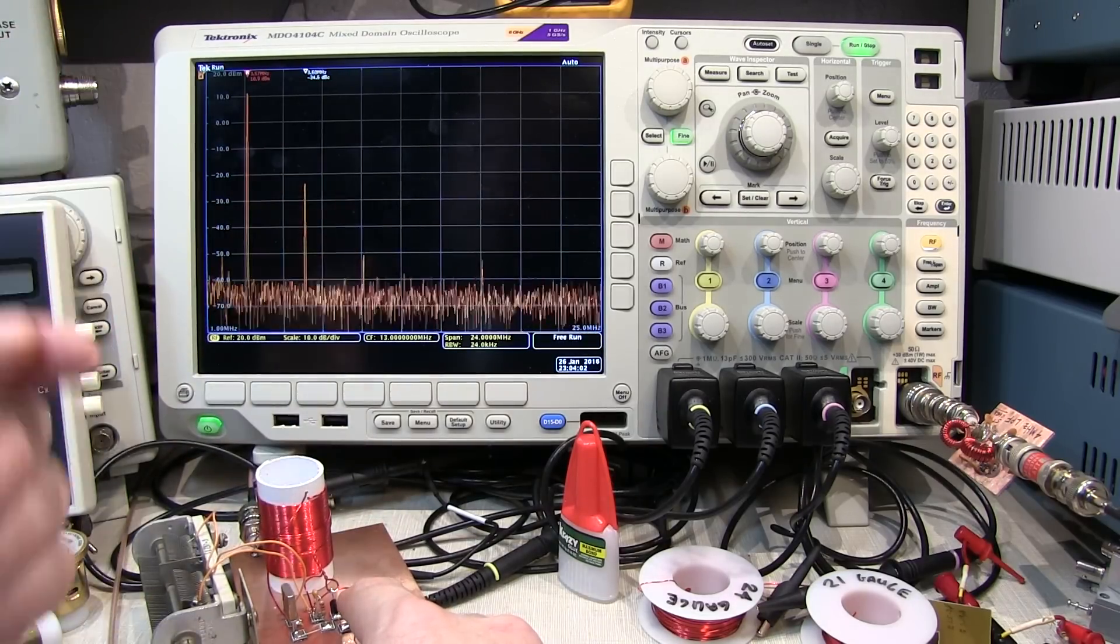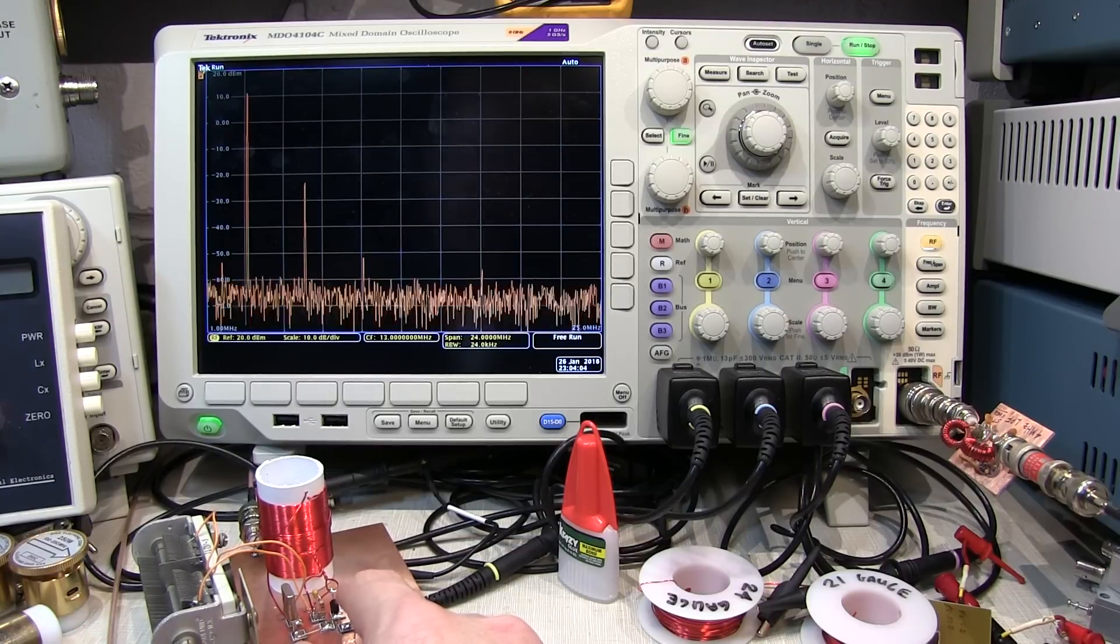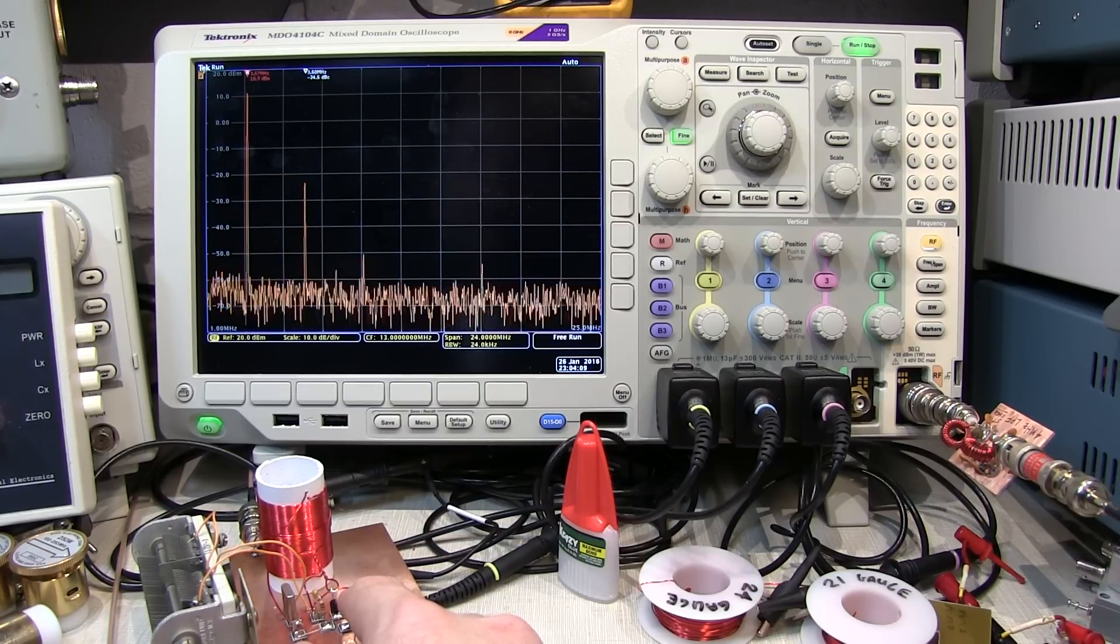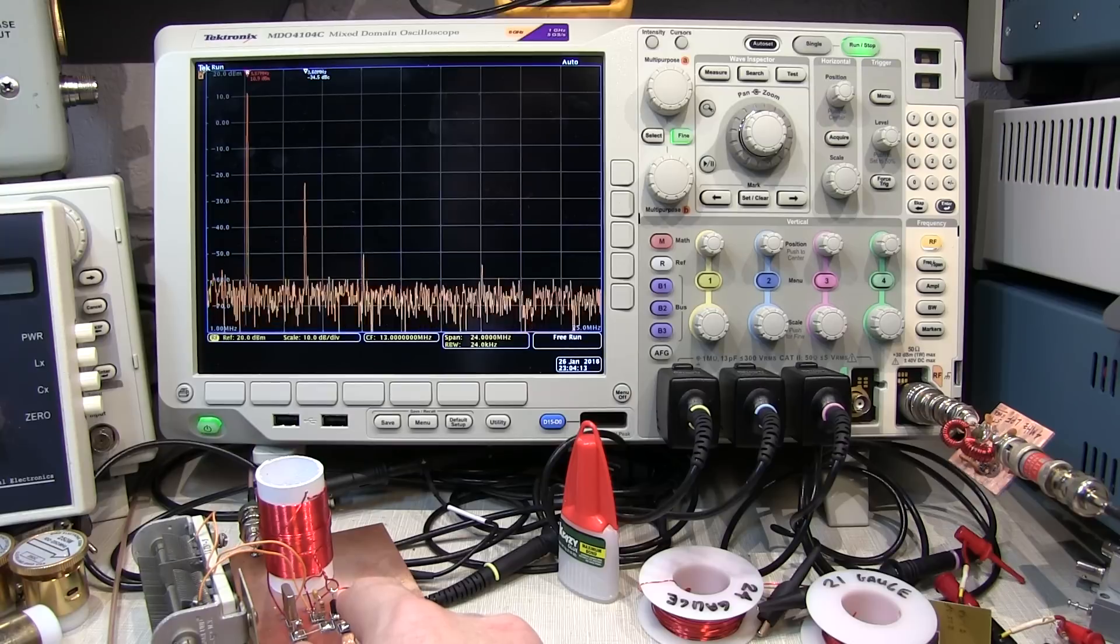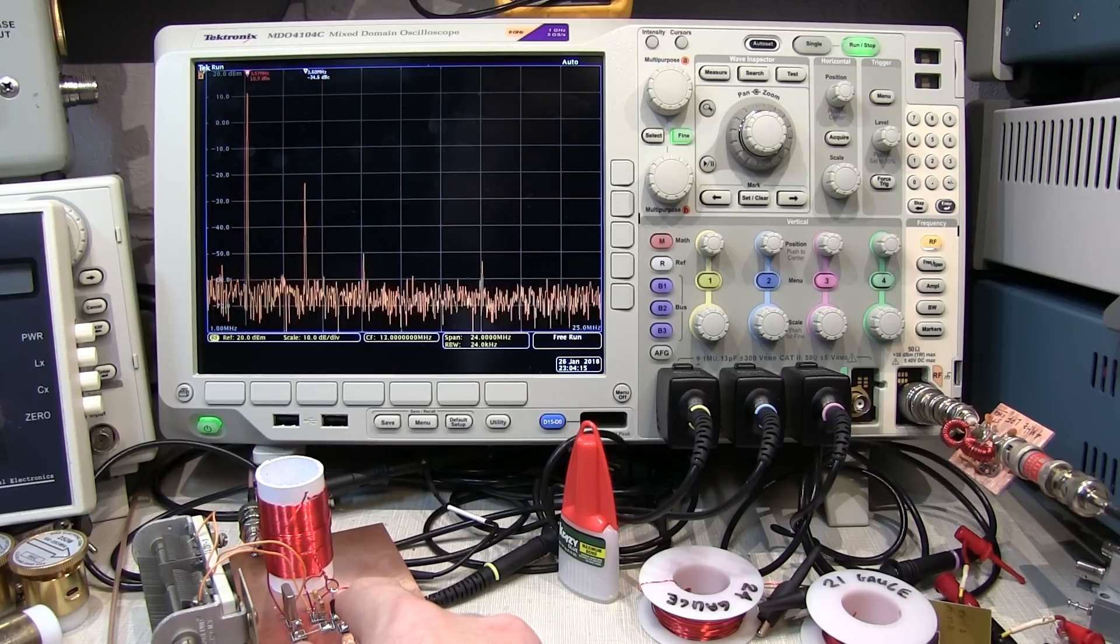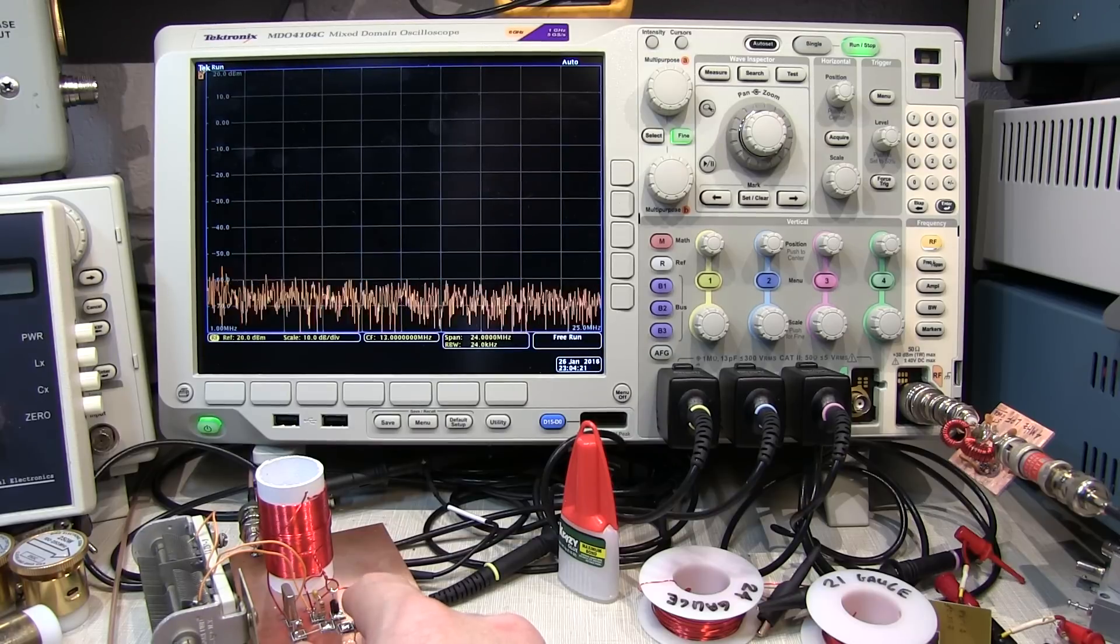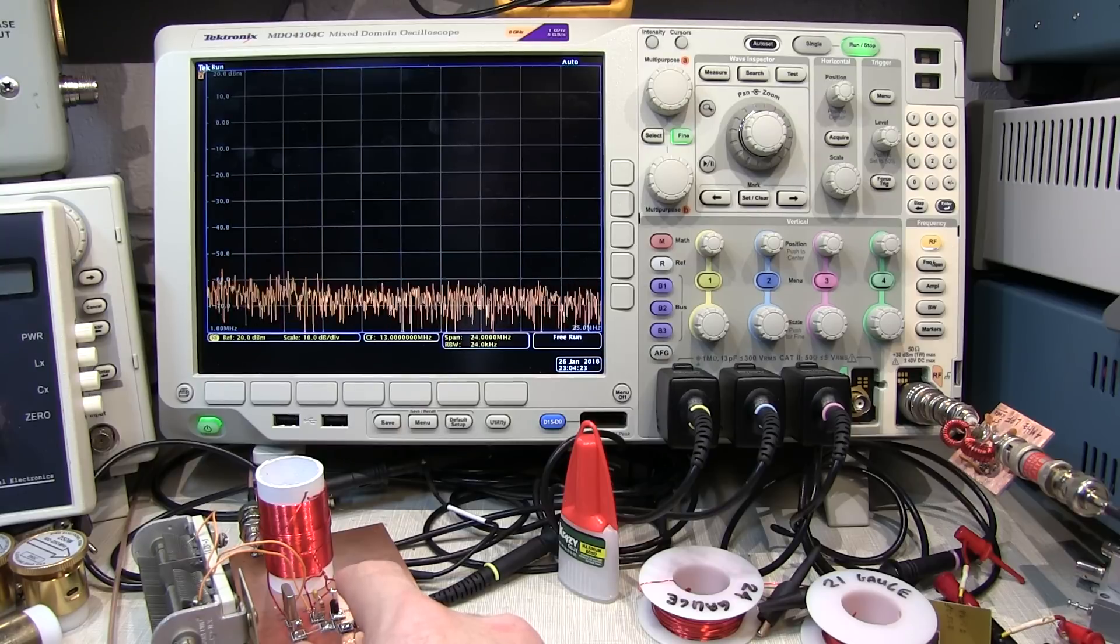35 dB down, that's probably close enough to say we could probably put this thing on the air. I might go through and tweak that filter a little bit to see if I can get that second harmonic 40 dB down or so, and that would be kind of more ideal. But we can see that's really cleaned up the signal in terms of its spectral content and harmonic distortion.